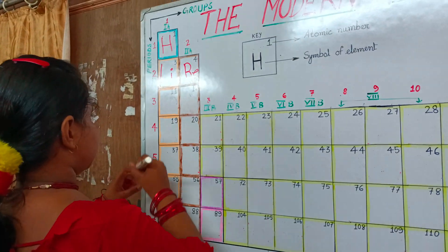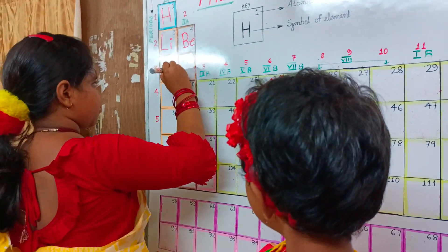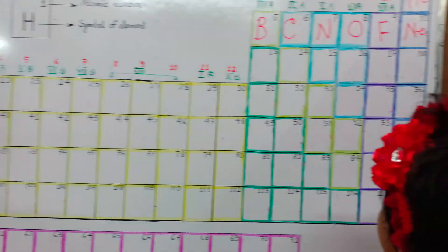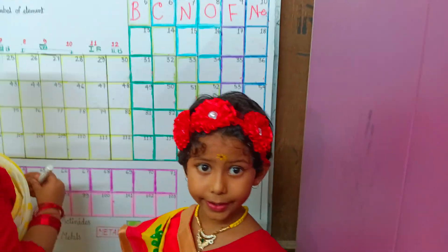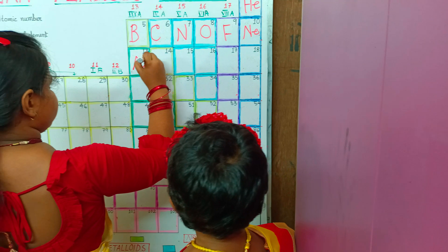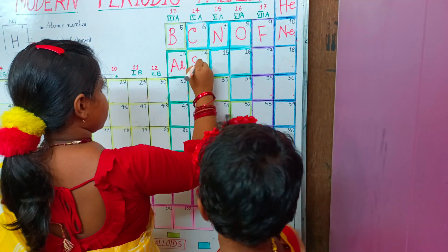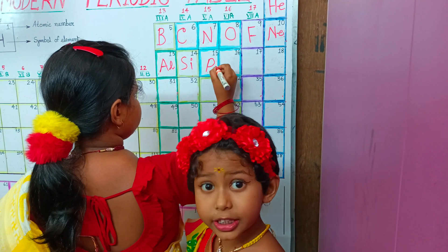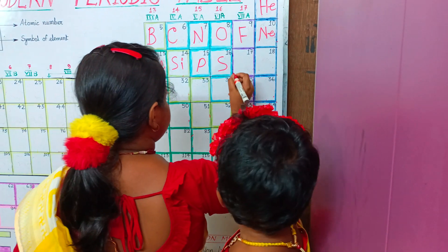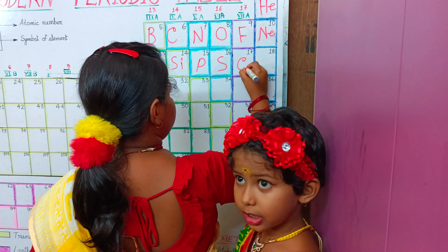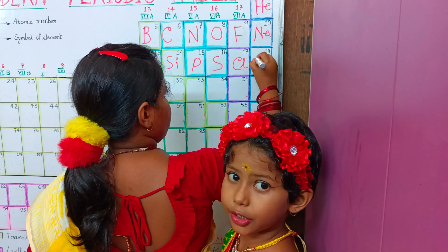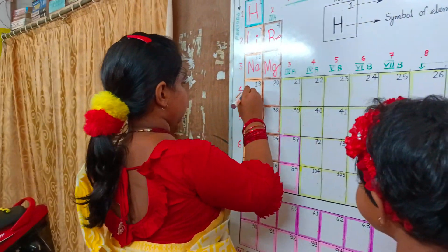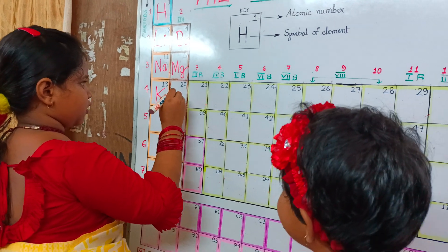11 sodium, Na. 12 magnesium, Mg. 13 aluminum, Al. 14 silicon, Si. 15 phosphorus, P. 16 sulfur, S. 17 chlorine, Cl. 18 argon, Ar. 19 potassium, K. 20 calcium, Ca.